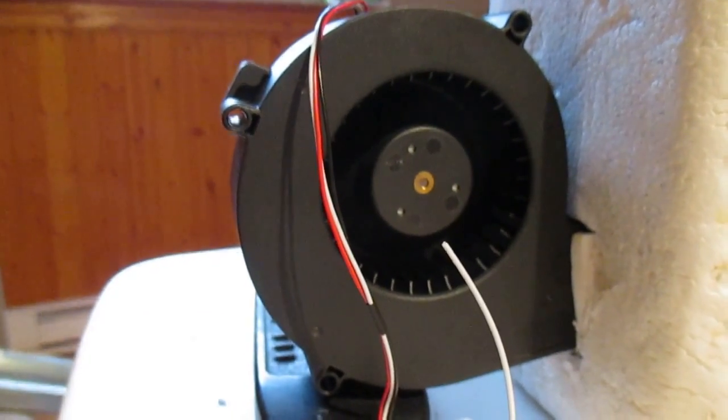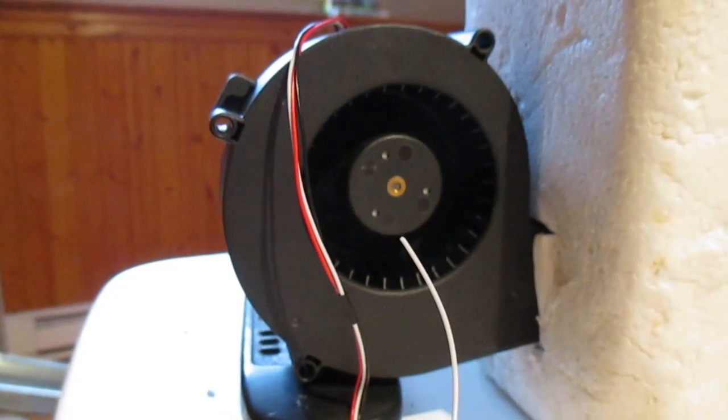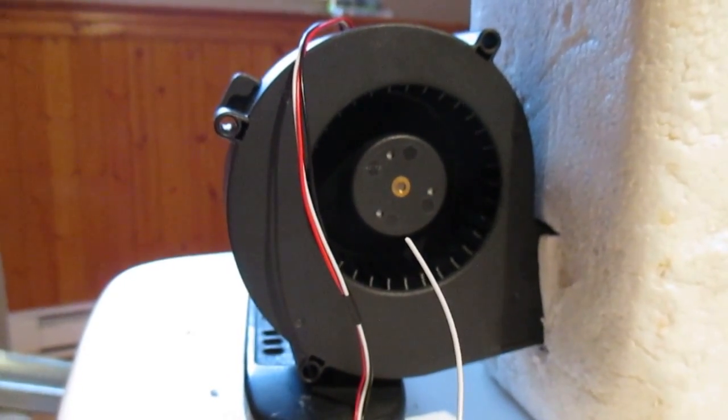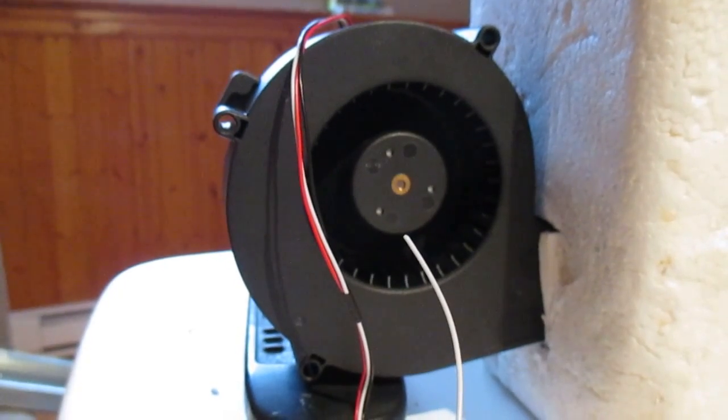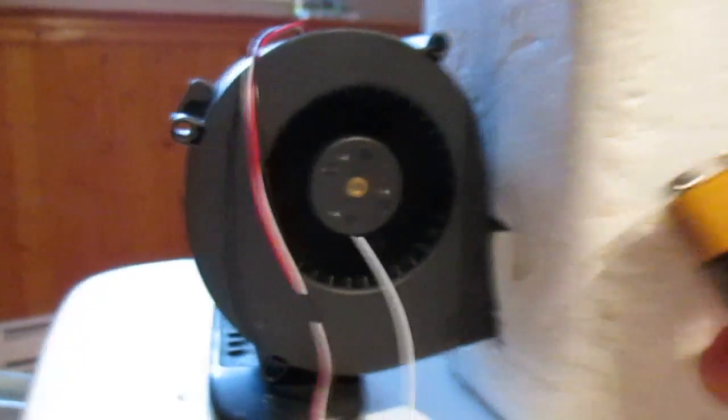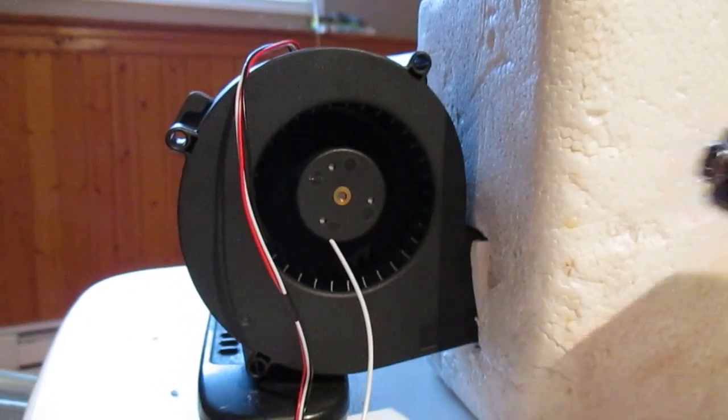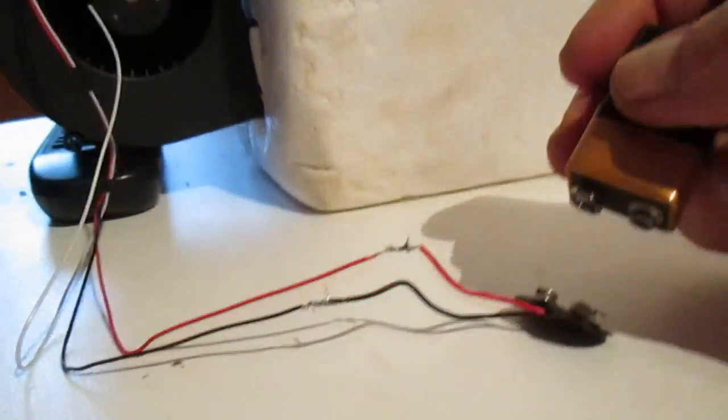As I say, it doesn't have to be a 10 volt rated fan, just a little DC fan to blow air through. We're gonna use a nine volt battery, which we're gonna be running it off solar panels, but just to show you a little nine volt battery here.